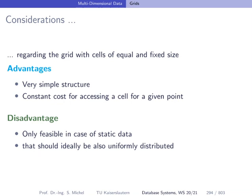Now this was the first approach, grid-based indexing. The advantage is it's very simple. The cost for accessing certain cells is constant because you can easily compute in which cell a certain point falls. There's no tree structure you have to traverse, it's just a simple computation. Disadvantage, because you can imagine that's not the end of the story, is that this is feasible only for static data and for data which would be uniformly distributed.